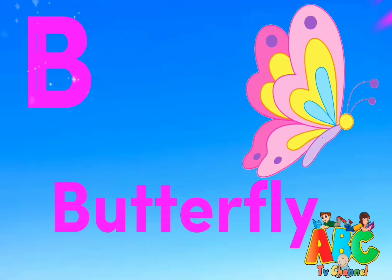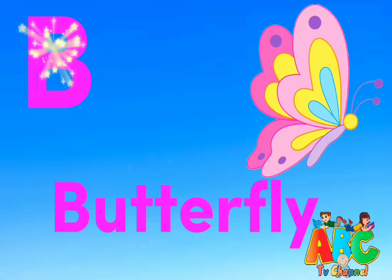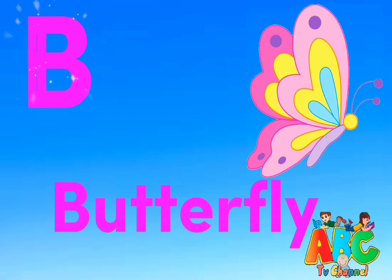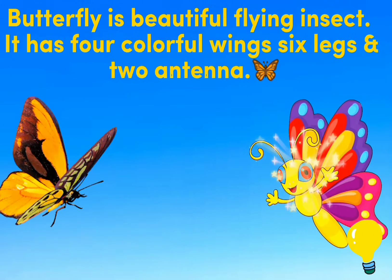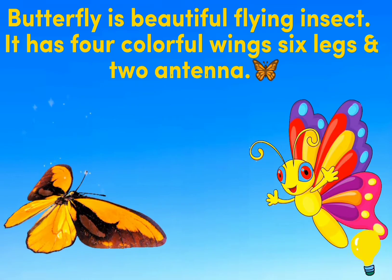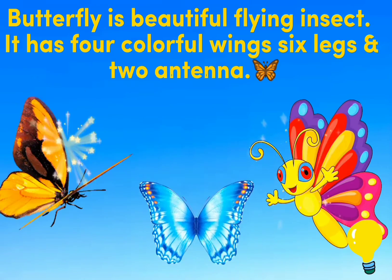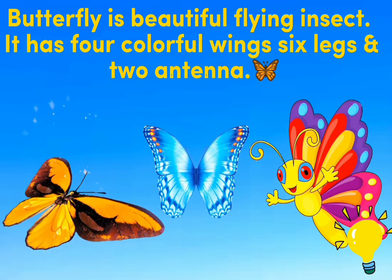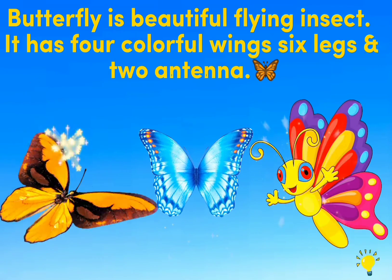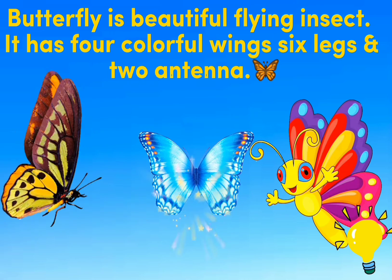B. Butterfly. Butterfly is a beautiful flying insect. It has four colorful wings, six legs, and two antennae.